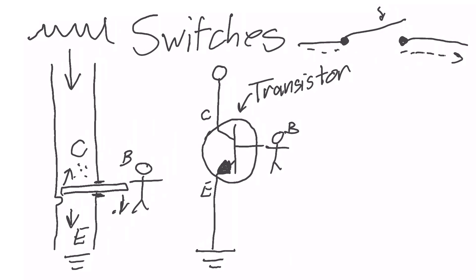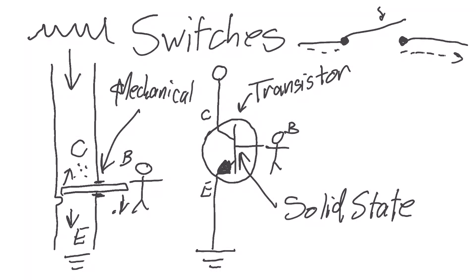So the fundamental difference between the water pipe example and the transistor, aside from one being water and the other being electricity, is that this mechanism for the switch is mechanical. Whereas this mechanism right here is solid state.